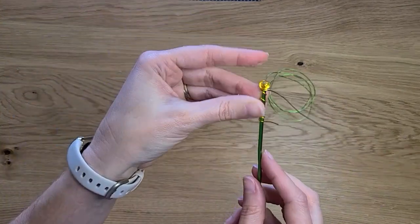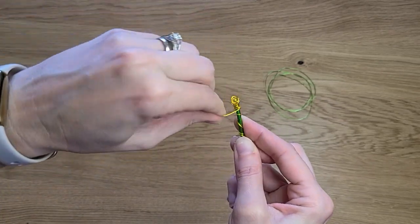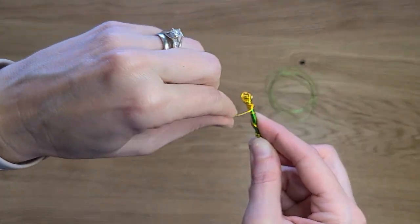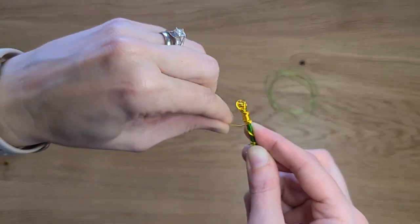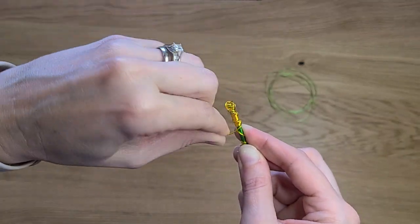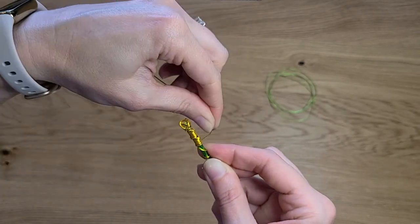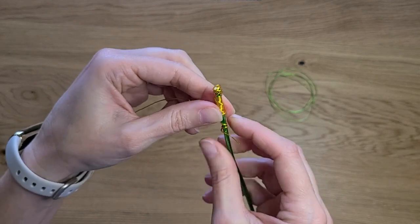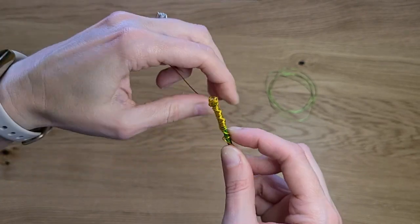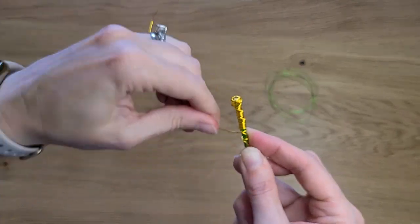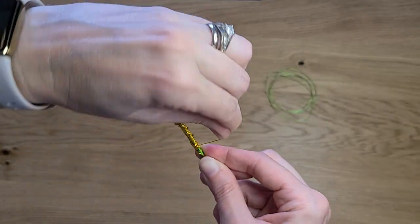Once you get the shape you want up there, you're going to begin wrapping tightly again, straight down the stem. You can see I'm wrapping my wire so that it's fairly close and touching because I want to cover as much of that green as I can. Because when you see the stamen, it's yellow. So you want to wrap it nice and tight so it's not going to move around on you, all the way down to the bottom.